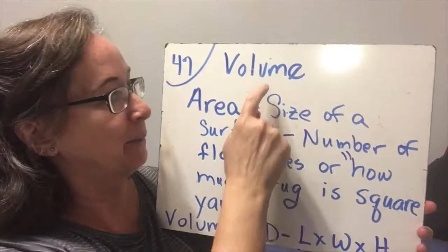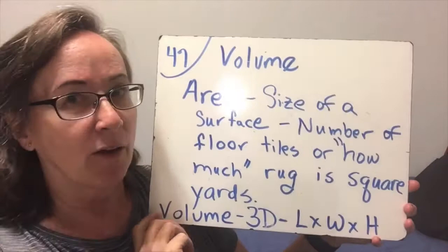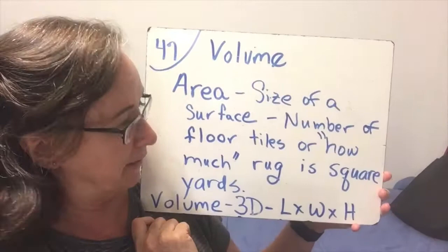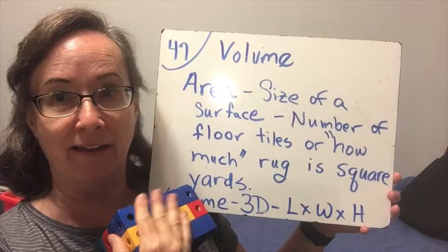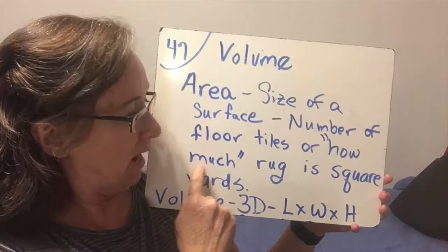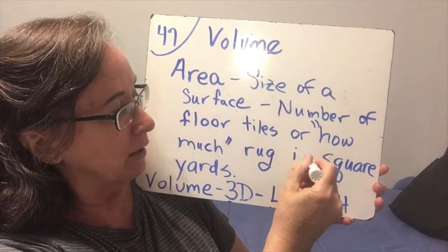While we talk about volume, we're going to get to play with blocks because they're fun. We're going to refresh a little bit. Area is different from volume, but area we've already talked about. Area is the size of a surface, and a surface is one side of a figure. It could be the number of floor tiles you would need, or how much rug in square yards. We measure area in square units.